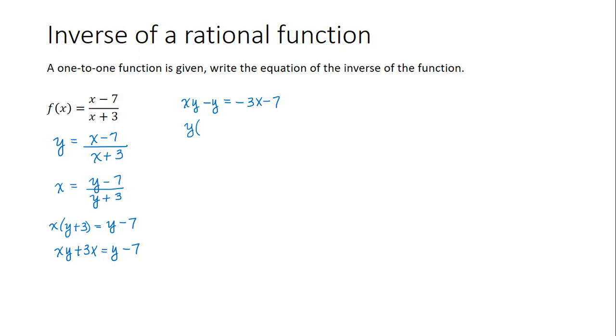I'm left with y times x minus 1 is equal to negative 3x minus 7. So now to solve for y, I can divide each side by x minus 1.